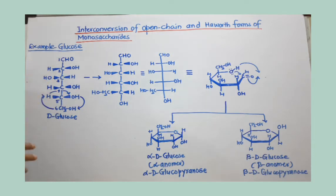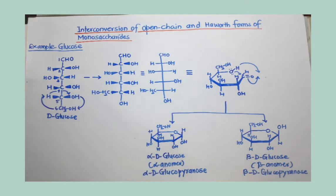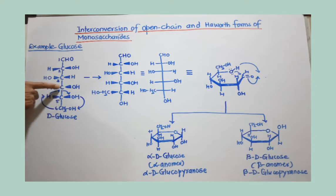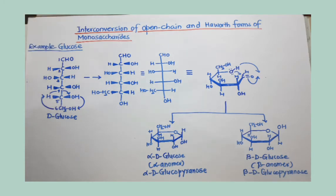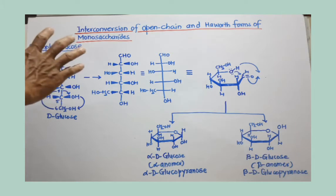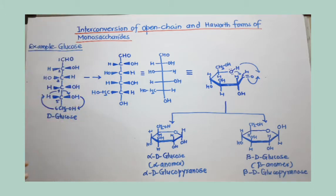If you want to convert this into cyclic monosaccharide, you have to select the hydroxyl group present either at the fourth carbon or the fifth carbon. If you select the hydroxyl group at the fourth carbon, you will get the furanose form, which we have seen in a previous video. If you select the hydroxyl group at the fifth carbon, you will get the pyranose form. The pyranose form is a six-membered ring and the furanose form is a five-membered ring. The six-membered ring is more stable, so glucose prefers the pyranose form. We will therefore consider only the pyranose form.